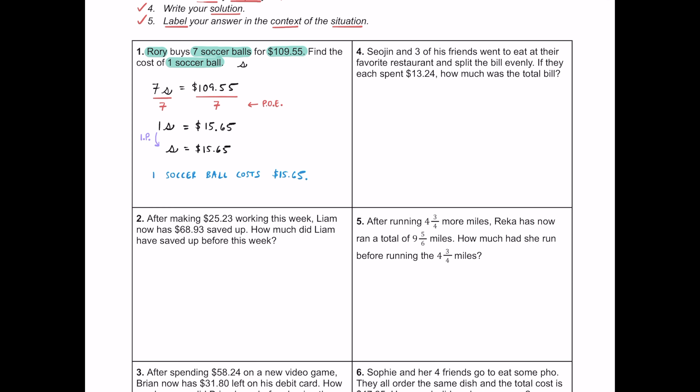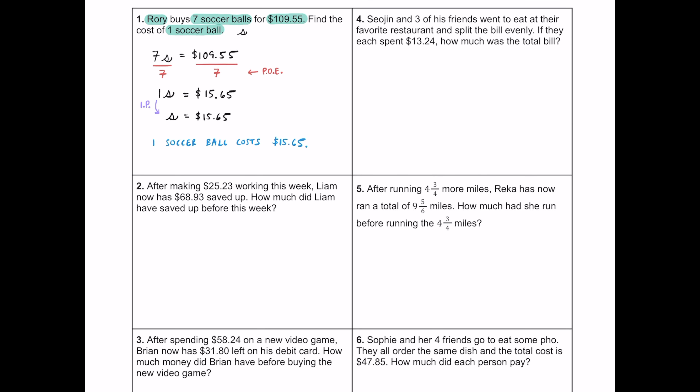For number two, after making $25.23 working this week, Liam now has $68.93 saved up. The question is how much did Liam have saved before this week? I'm going to use M for money. He had M dollars, then he made $25.23 — that's added to what he has — and he now has a total of $68.93. So the equation is M + 25.23 = 68.93.